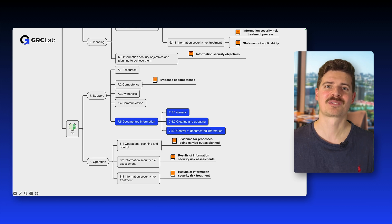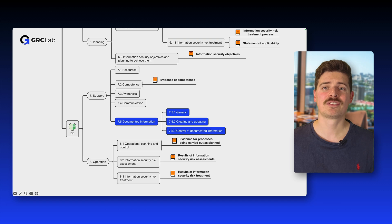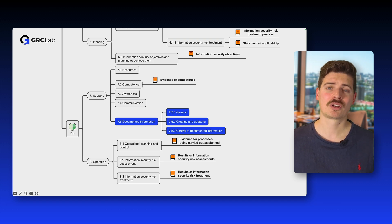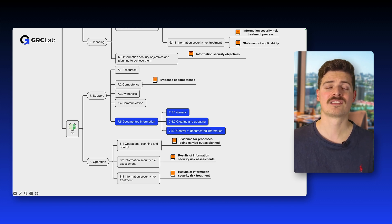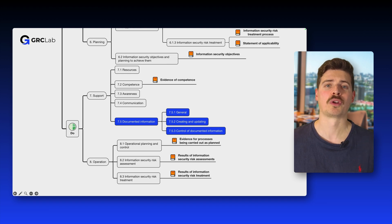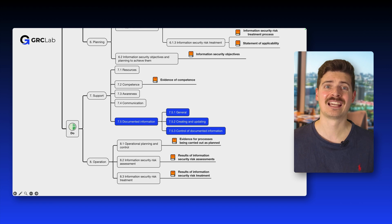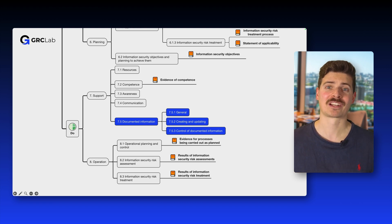Let's have a closer look at this subclause. The requirements for documented information are outlined in subclause 7.5 of the Support Clause, and this subclause is further divided into three parts: 7.5.1 General, 7.5.2 Creating and Updating, and 7.5.3 Control of Documented Information. Unlike other requirements, documented information isn't tied to a specific step in the implementation process, which is why we're covering it first, before diving into all the other subclauses in the next couple of lectures.